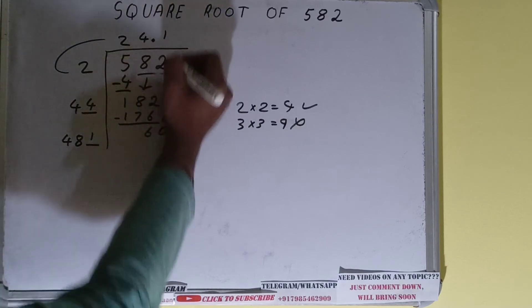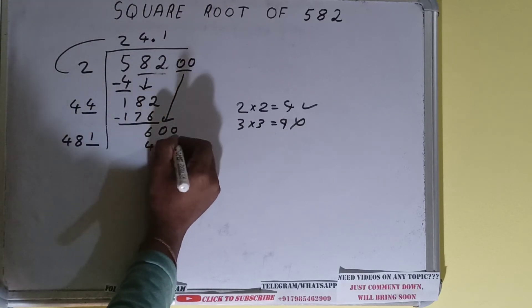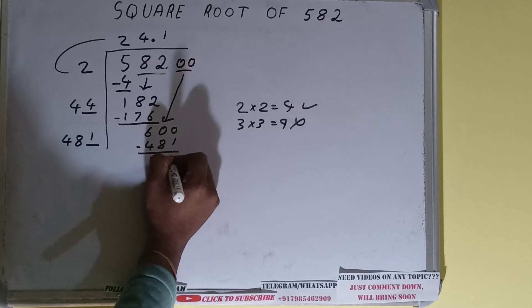So we can try 1. 1 here and 1 here gives 481, and 119 will be left.